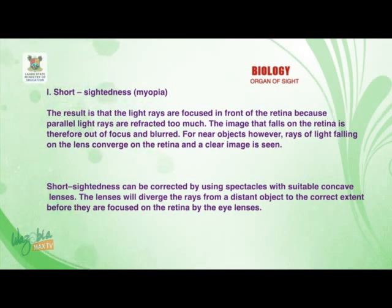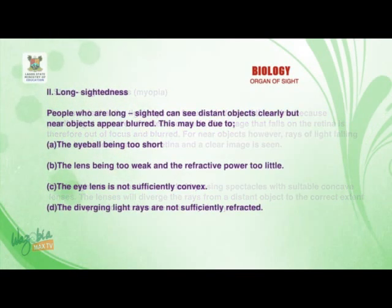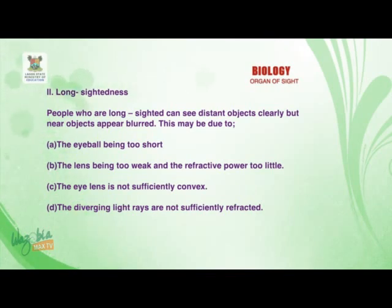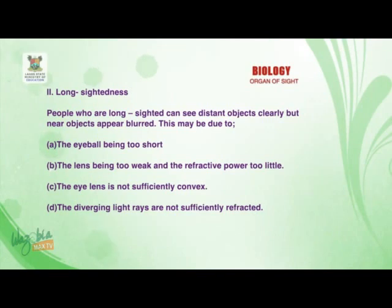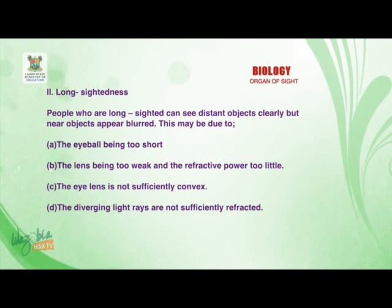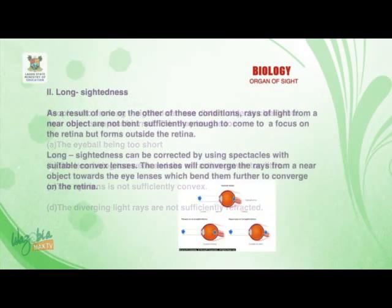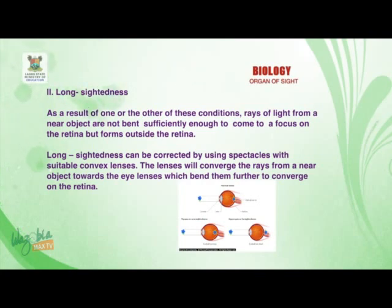The concave lenses will diverge the rays from a distant object to the correct extent before they are focused on the retina by the eye lens. The second defect is long-sightedness. People who are long-sighted can see distant objects clearly, but near objects appear blurred. This may be due to: one, the eyeball being too short; two, the lens being too weak with refractive power too little; three, the eye lens not being sufficiently convex; so diverging light rays are not sufficiently refracted and do not come to a focus on the retina.